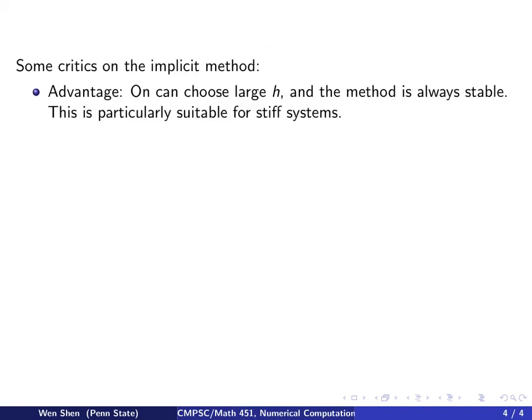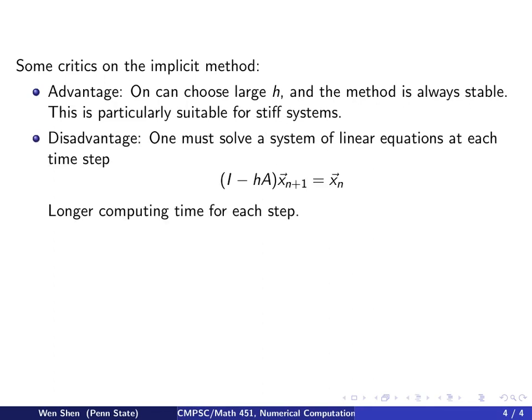Now let's look at some critics on the implicit method. So what's good about it? Well, one can choose some large values of time step, and the method will always be stable, no matter if the system is stiff or not. So this is particularly useful if you really have a very stiff system.